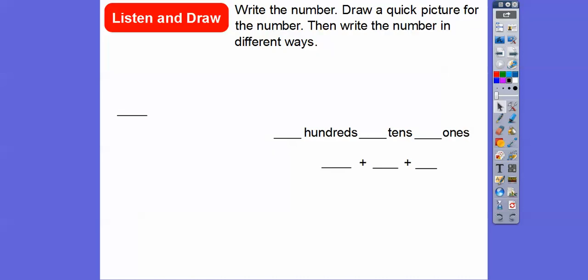So let's go ahead and write the number, draw a quick picture for the number. We're going to write the number that they want us to right here. We're going to draw a quick picture for that number right here, and then we're going to write the number in different ways. How many hundreds, how many tens, how many ones, and then we're going to write it with hundreds, tens, and ones right there.